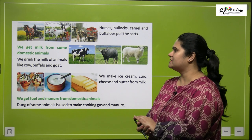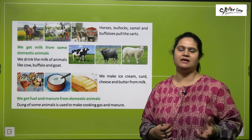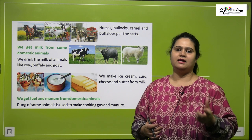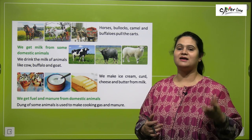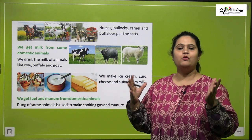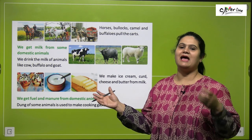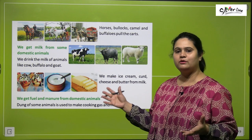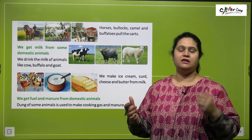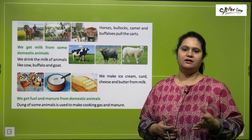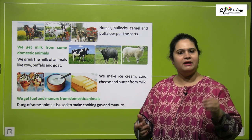We get milk from some domestic animals — milk is a very important and nutritious food. It is our complete food. We get milk from animals like cows, buffalos, goats, and even camels. Their milk is very thick and nutritious. All these animals give us milk.